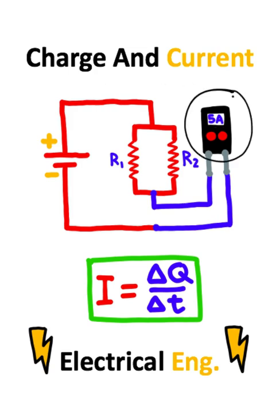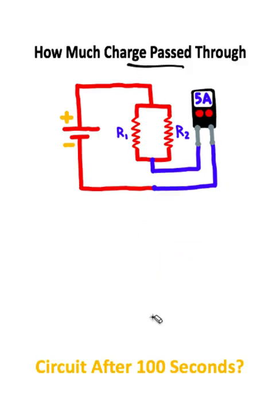In this question, we have a multimeter that is attached to a circuit and is measuring that 5 amps of current are flowing through the circuit. How can we calculate the charge after 100 seconds?